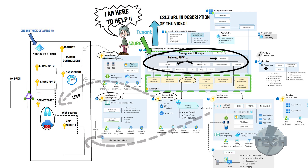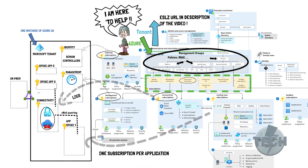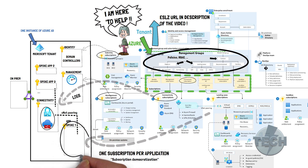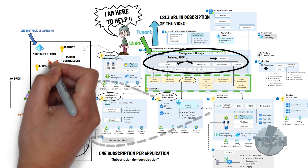Key takeaway here is: Microsoft recommends one subscription for each application. Yes, this is not a joke. Large enterprise customers have no problems and have hundreds of different subscriptions. There's a fancy word for it — they call it subscription democratization. That means the subscription becomes the management boundary for an application, making it easier to manage and assign permissions. In a large enterprise, the core subscriptions such as connectivity, management, and identity are all managed by different teams.